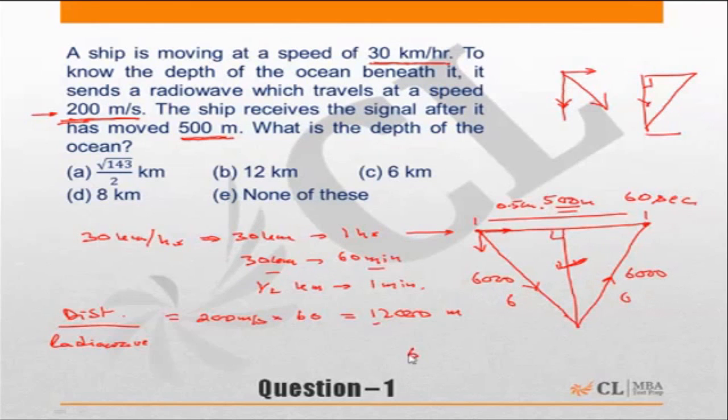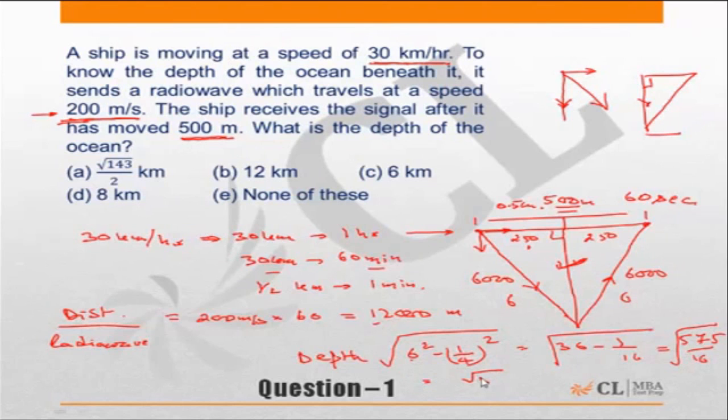You can say 6 squared minus, if this is 500 meters this should be 250 meters this will again be 250 meters. So this is 1/4 of a kilometer. Minus 1/4 squared under root should be the depth of the ocean. Which is equal to 36 minus 1/16. Which is equal to 16 into 36 minus 1. This will be under root of 575 upon 16, or the answer has to be under root of 575 upon 4.